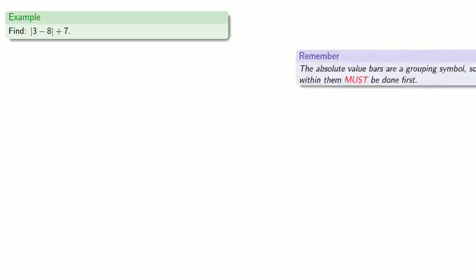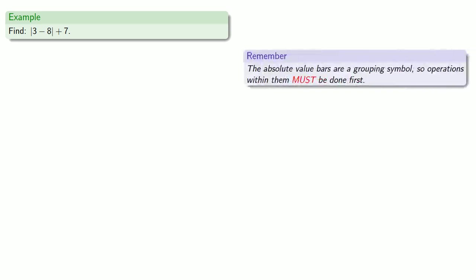What if we throw absolute value into an arithmetic expression? Find the absolute value of 3 minus 8, plus 7. The important thing to remember here is that the absolute value bars are a grouping symbol, so operations within them must be done first. So first we have to find the absolute value of 3 minus 8.